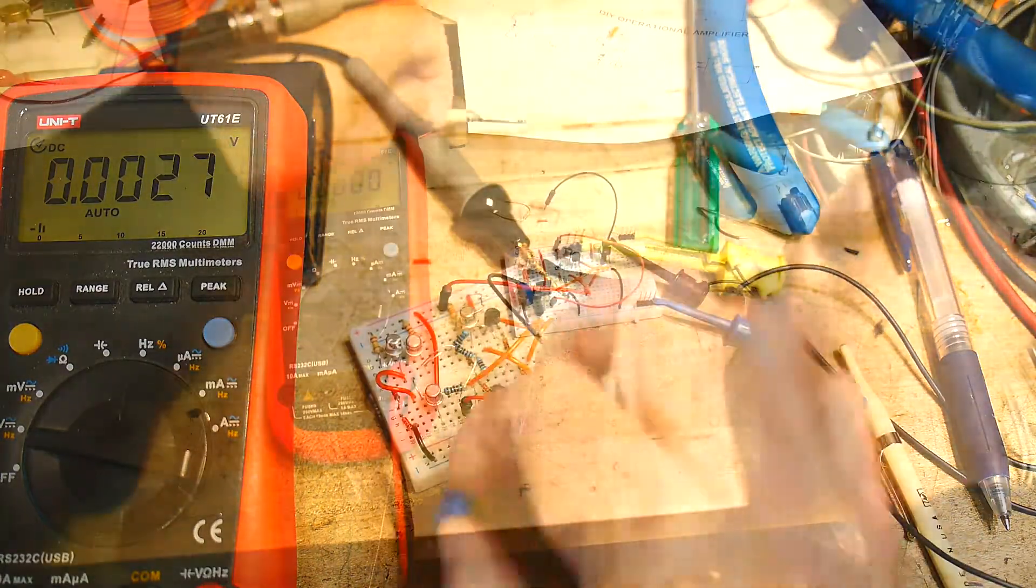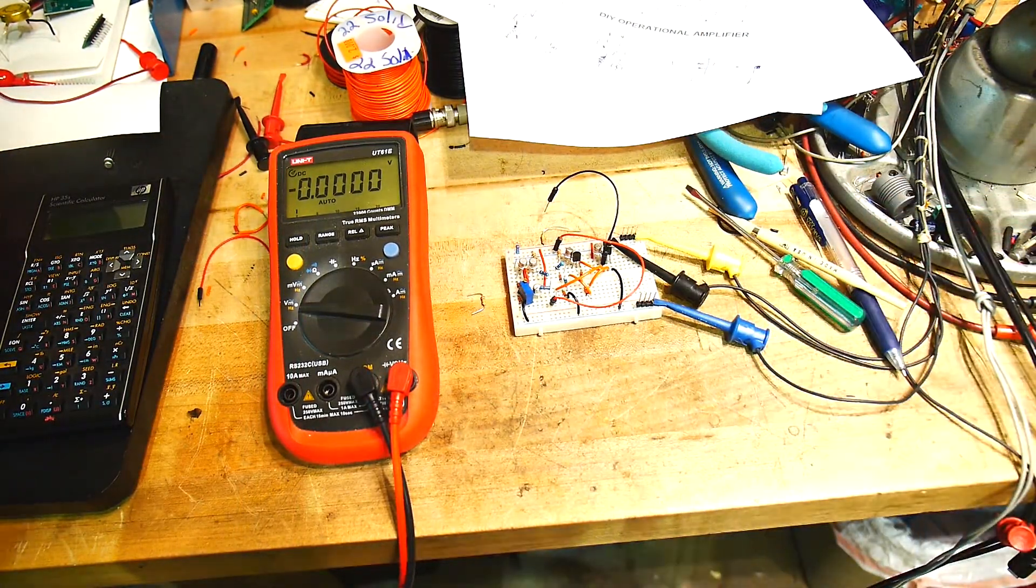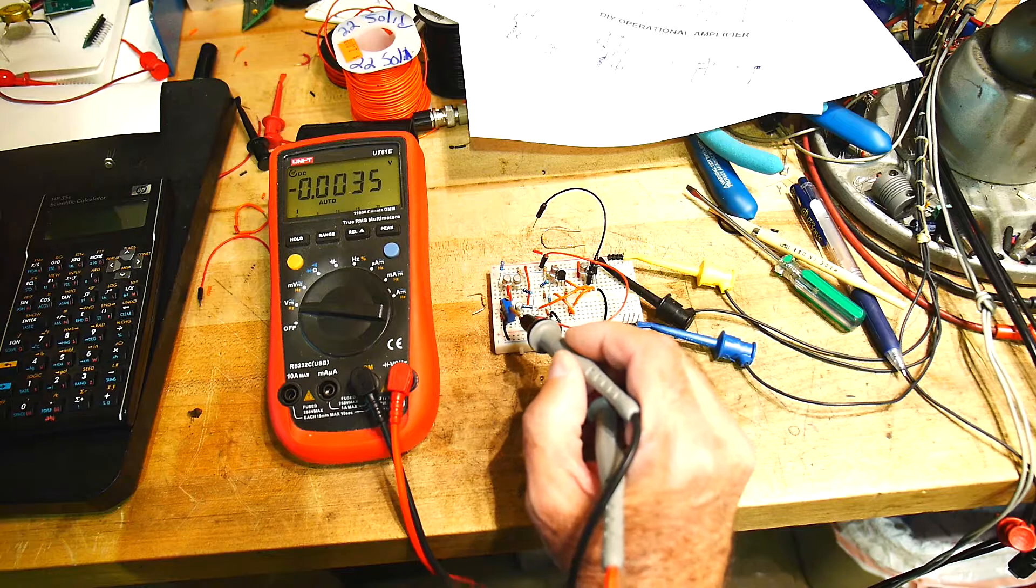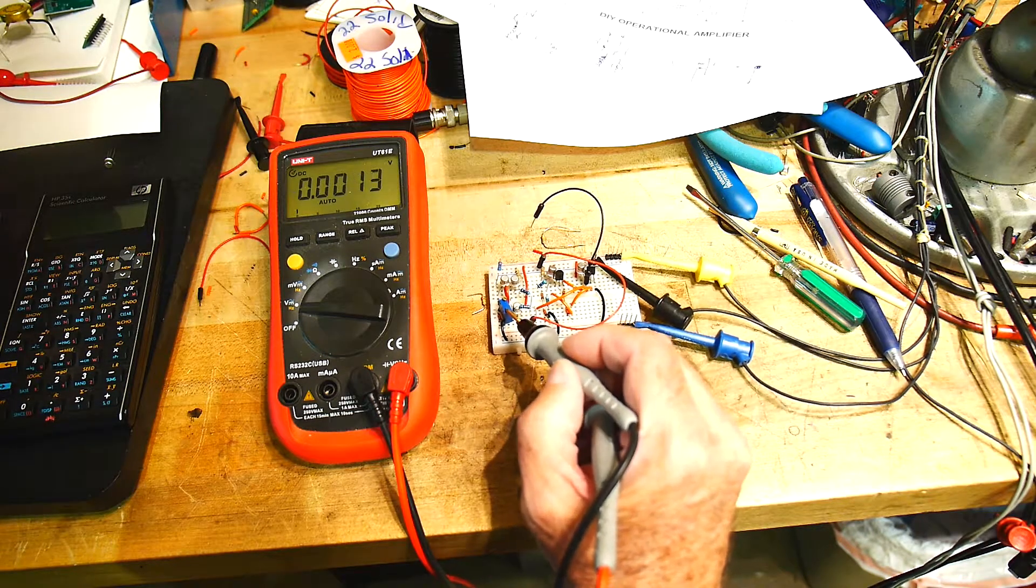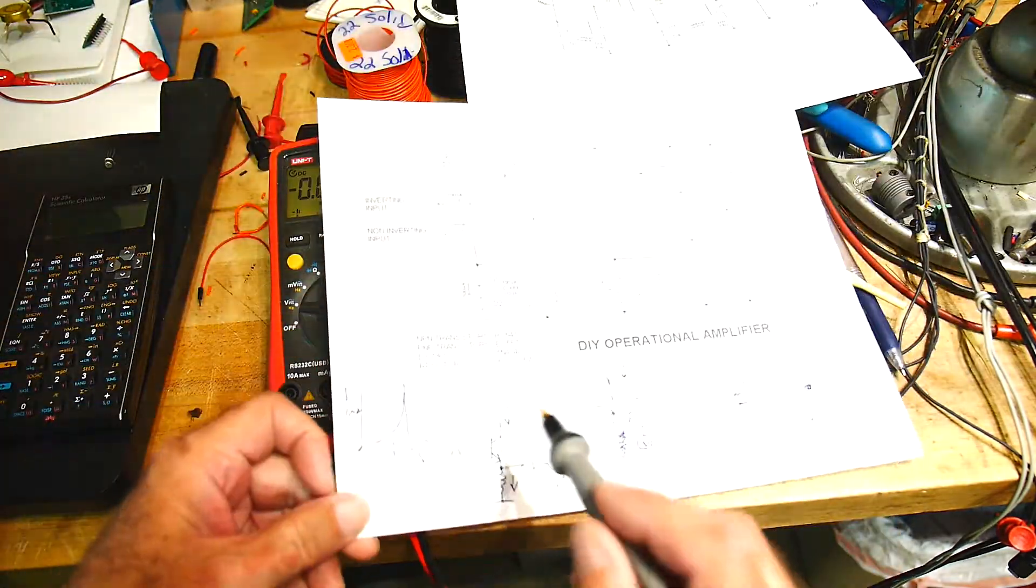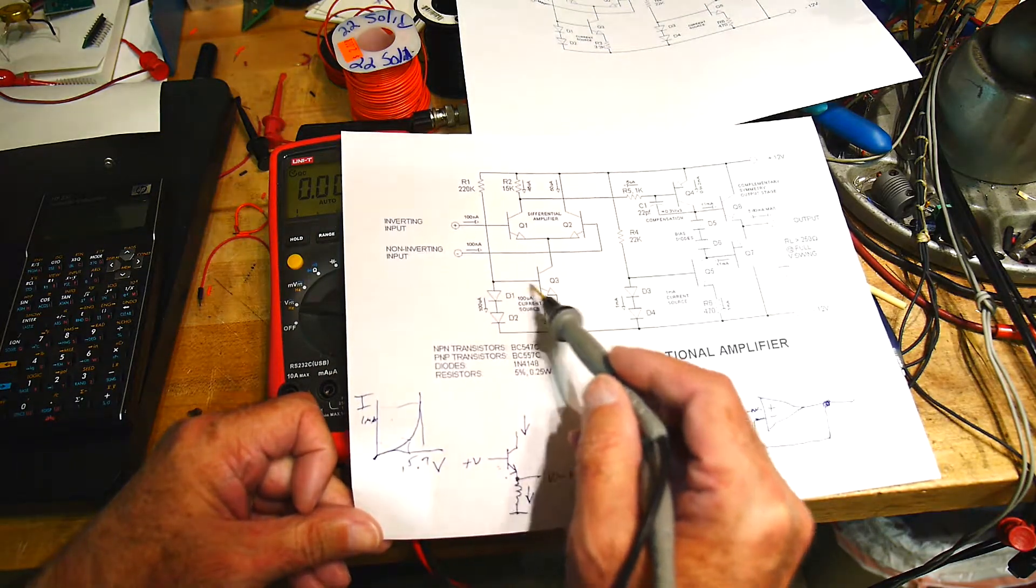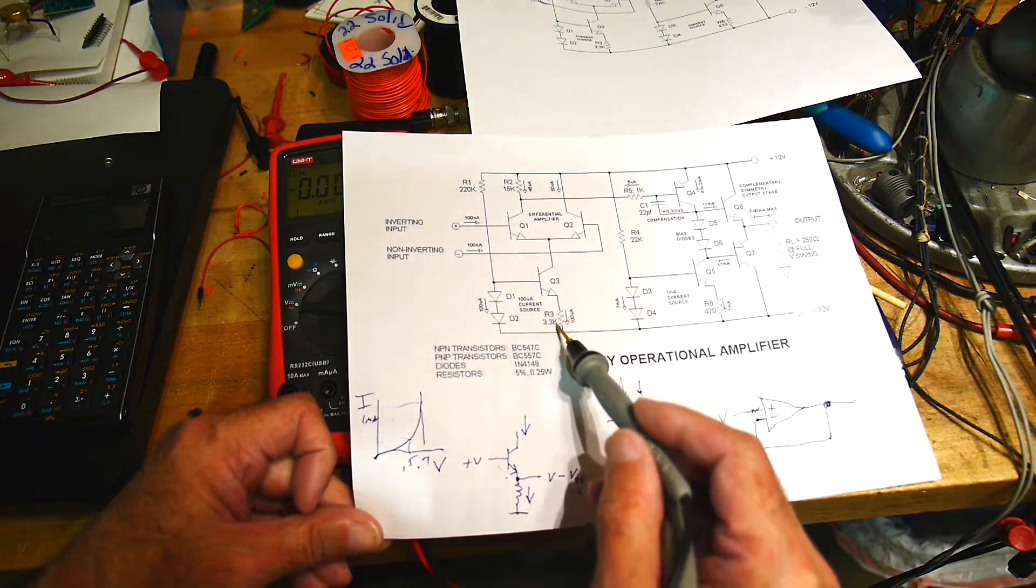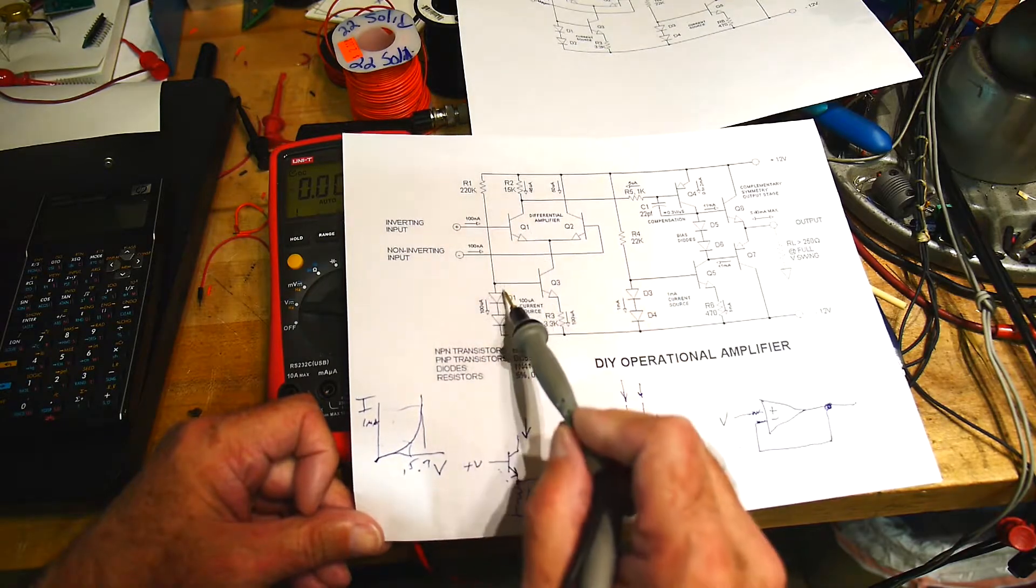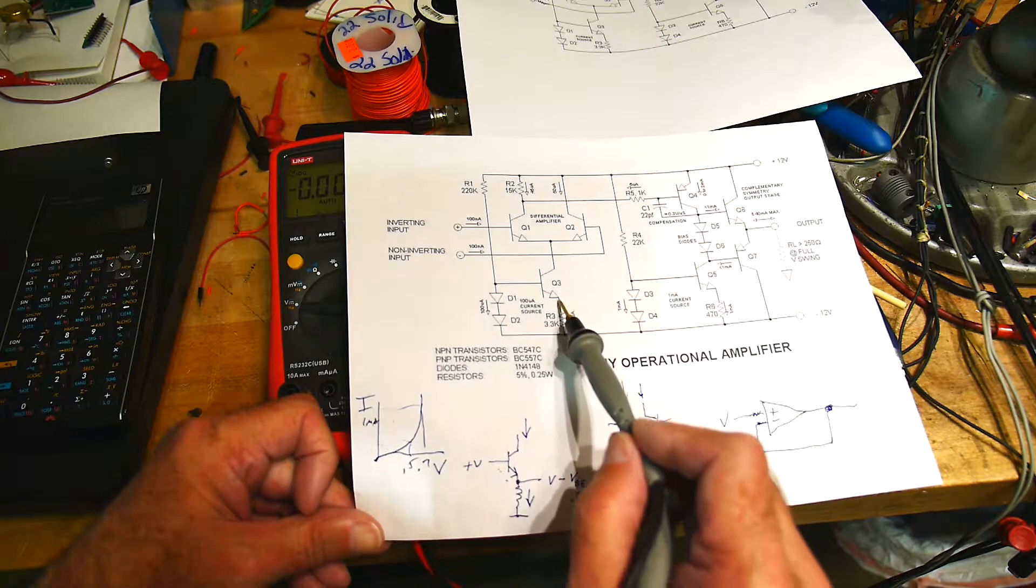Okay, I forgot to push the record button, but I have it working now. So we have the 10k pot here, and I've done two things to the circuit. One is I wasn't happy with the low voltage I was getting here because I would get a very low voltage across this resistor. So I went ahead and put a 22k here as well to get this up to a volt.